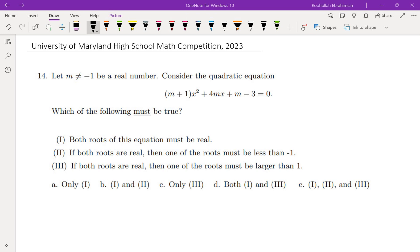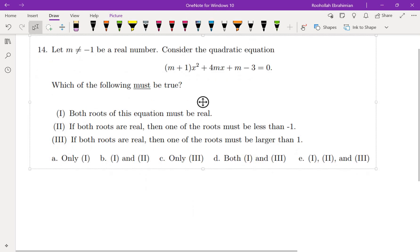So let m be a real number that is not equal to negative 1. Consider the quadratic (m+1)x² + 4mx + m - 3 = 0. Which of the following must be true?